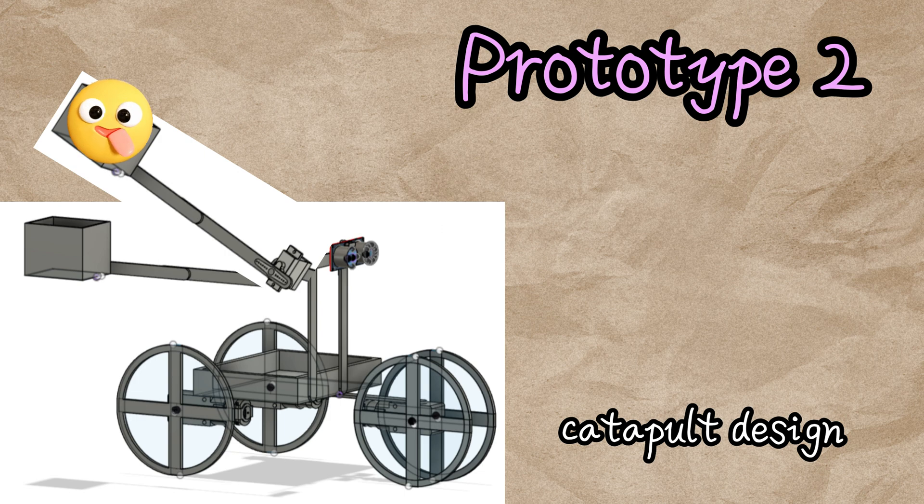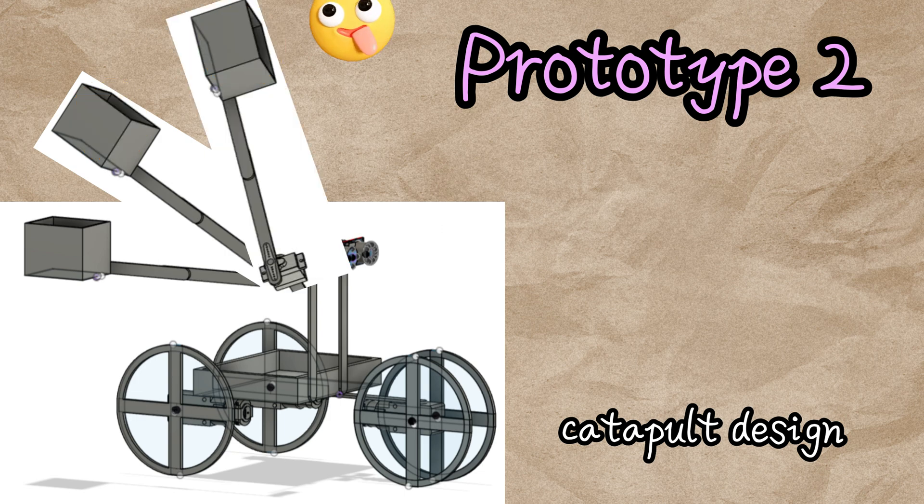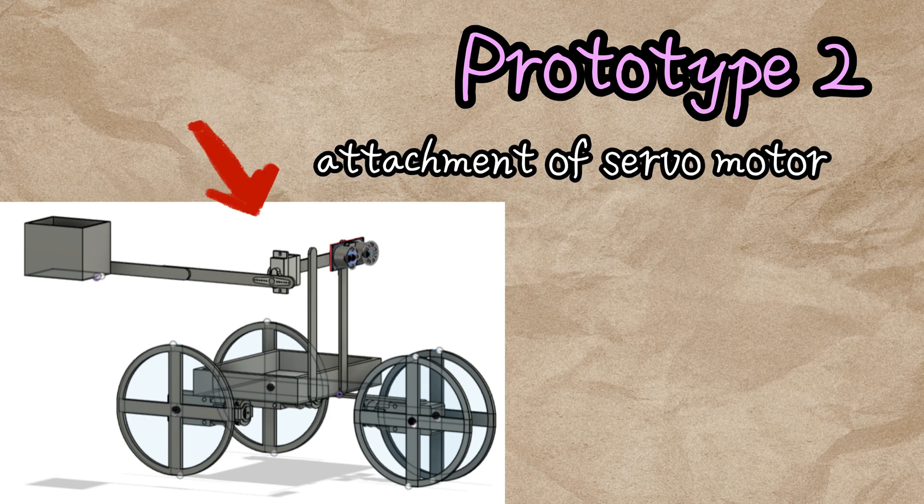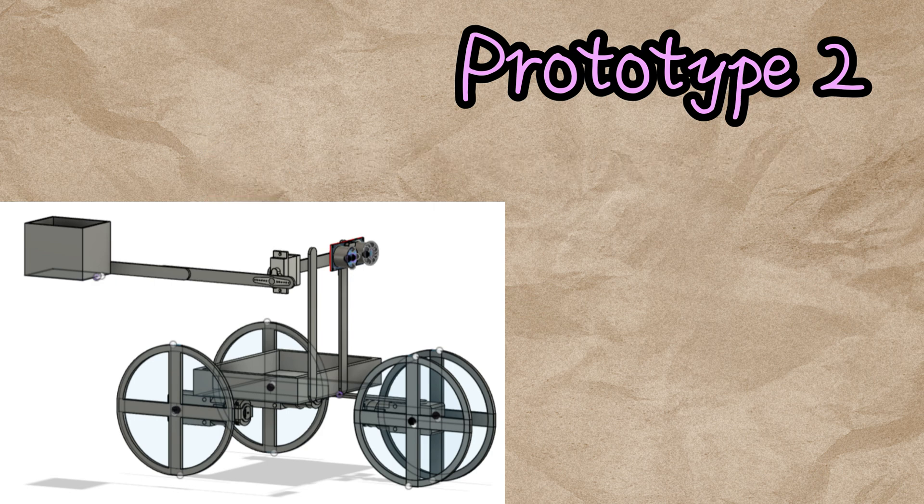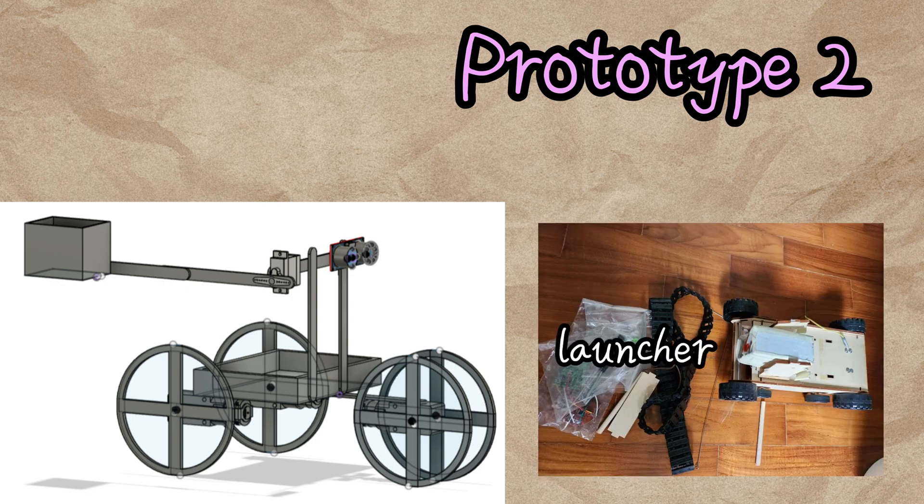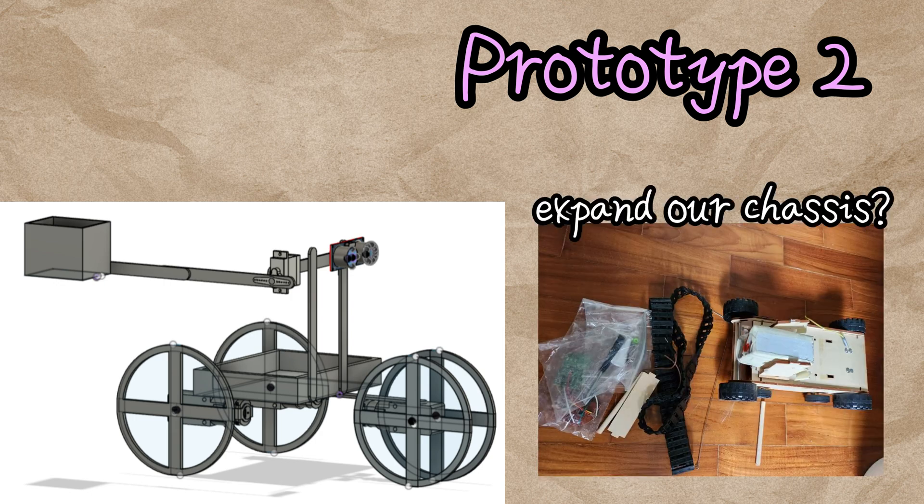For our throwing mechanism, we went for the catapult design as it is more straightforward to implement. We just have to attach the servo to an ice cream stick which rests on the chassis. It also saves more space compared to a long arm where we would probably need to consider expanding our chassis.